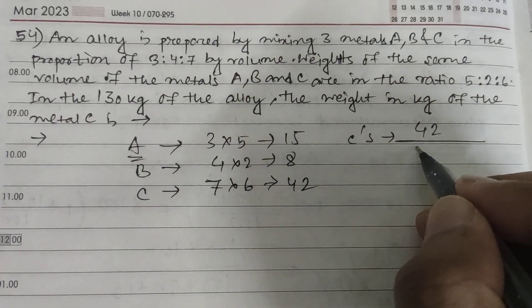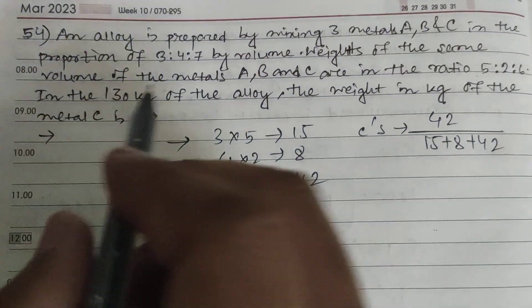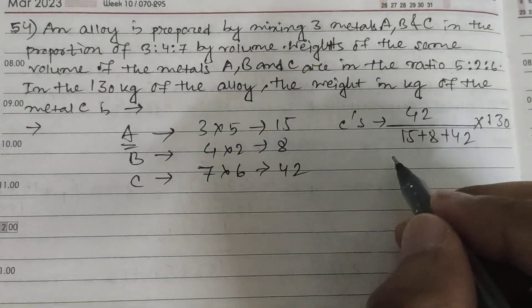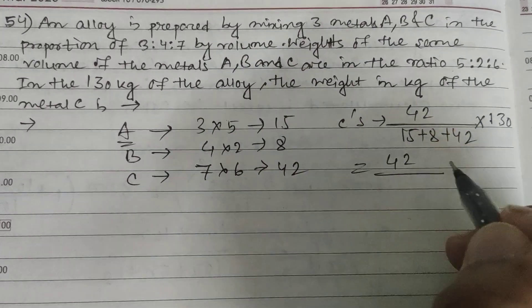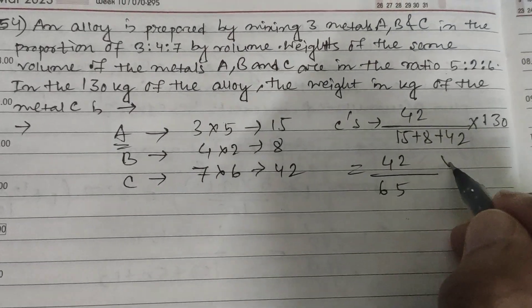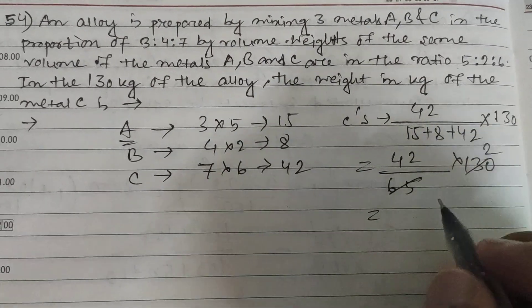Divided by 15 + 8 + 42, and total is 130 kg. So 42 by 15 + 8 = 23, 23 + 42 = 65. So 42/65 × 130 = 84.